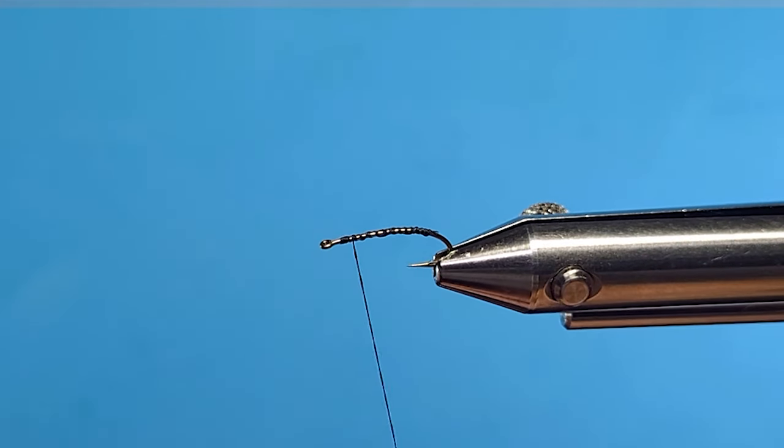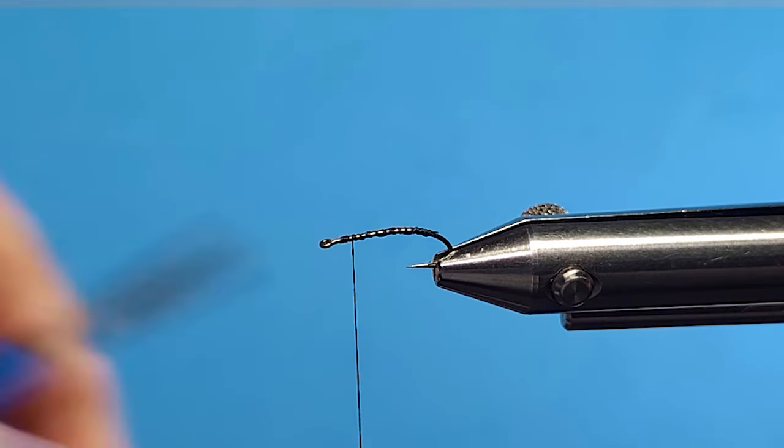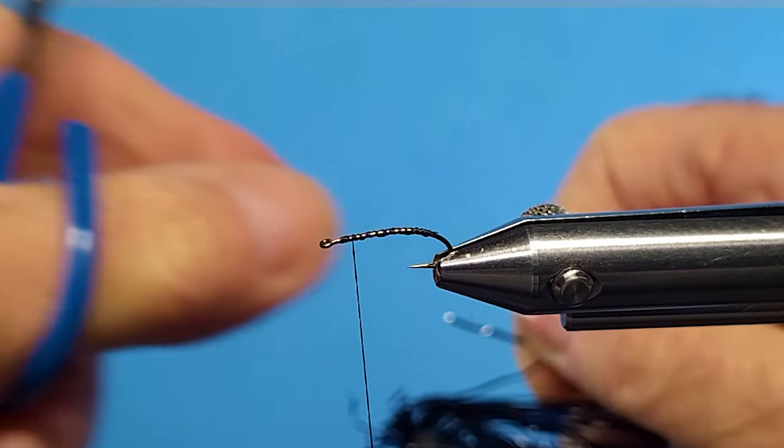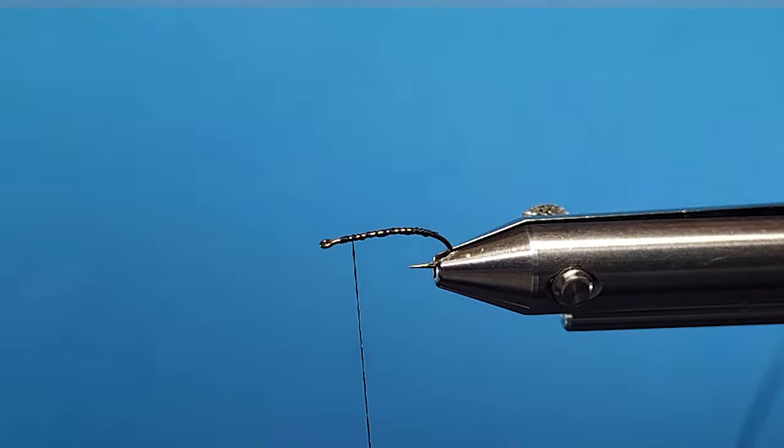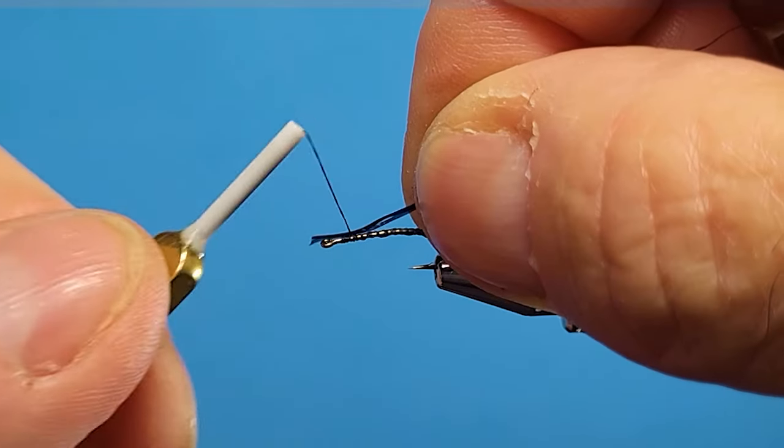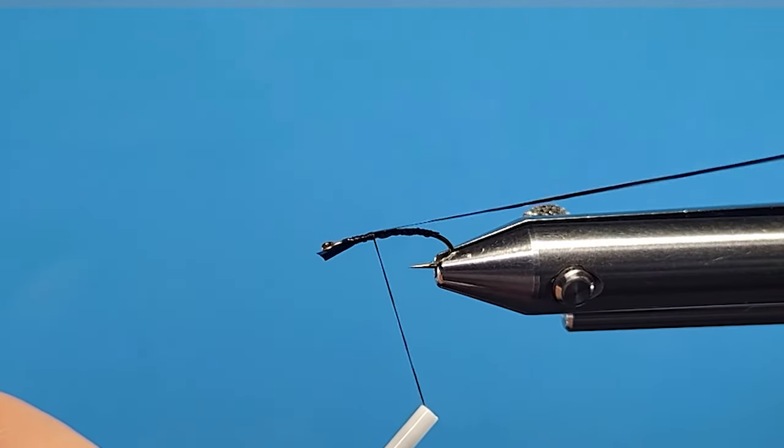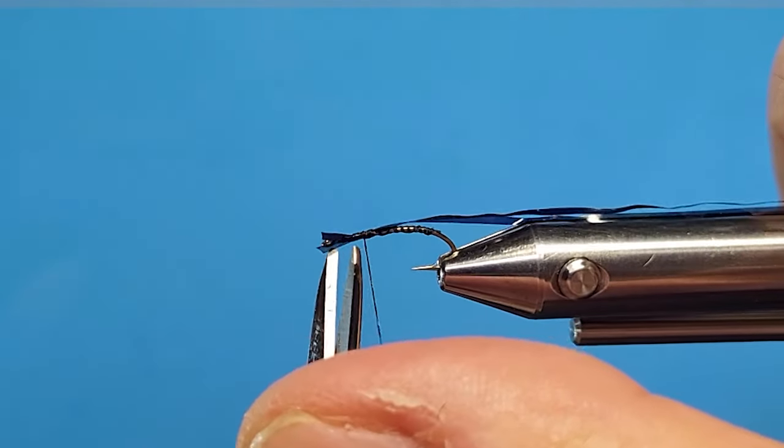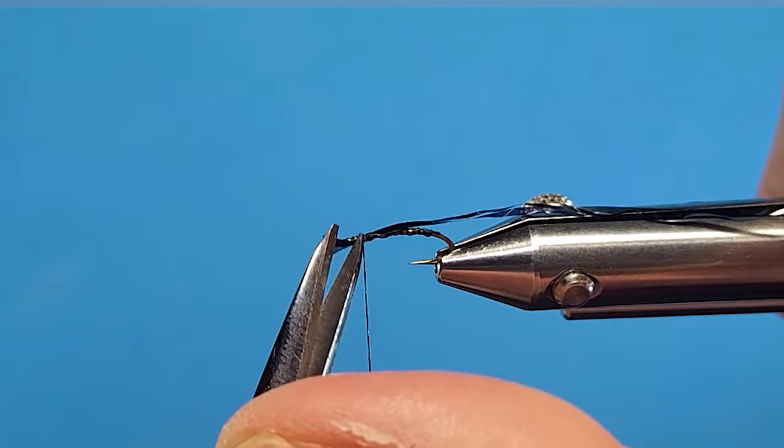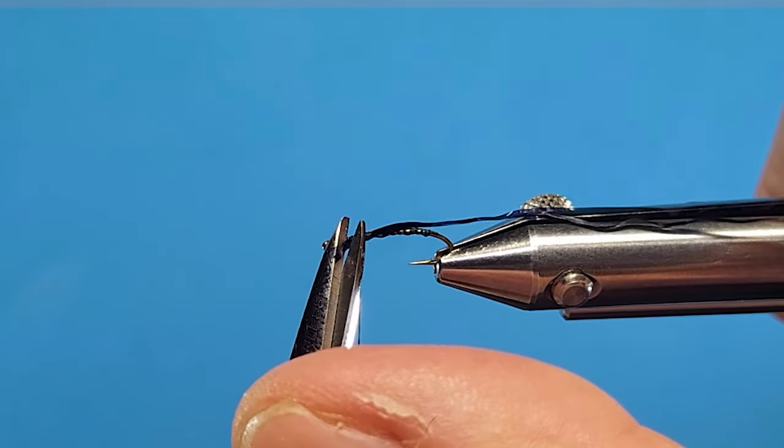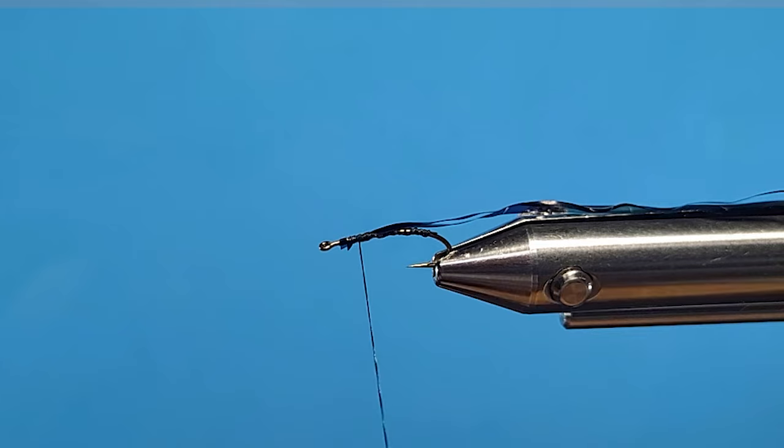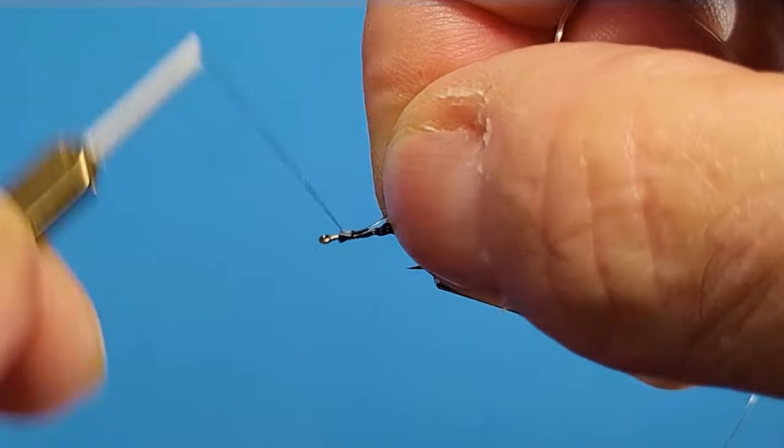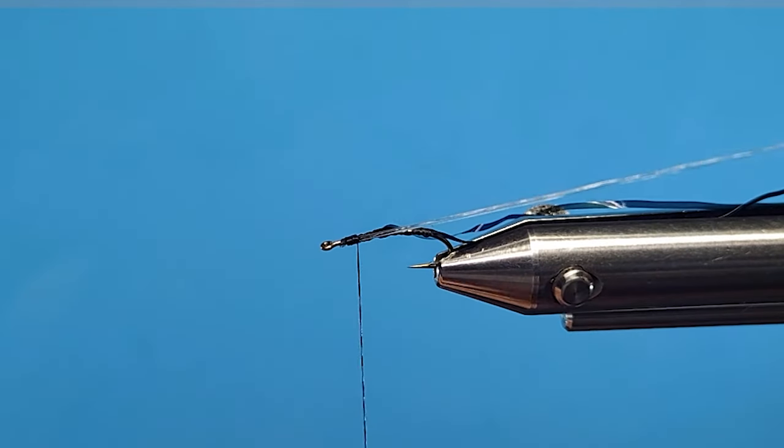Put my thread base down so everything doesn't slide around on me. I'll be coming in here with two strands of the buzzer wrap. Catch that in the front here. There we go. I'm tying with my camera between me and the fly so sometimes I get a little kind of far away from my business.